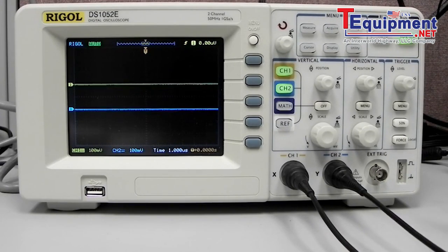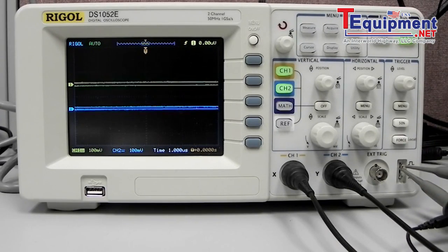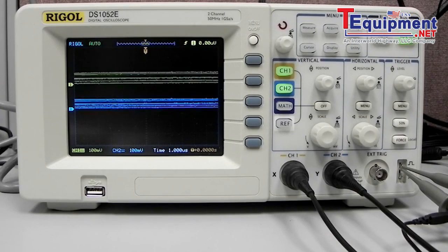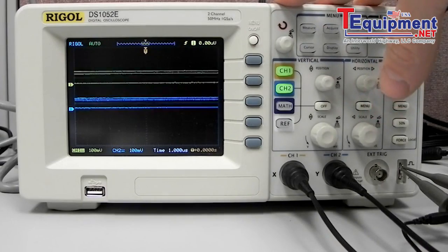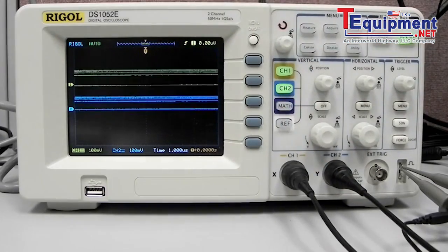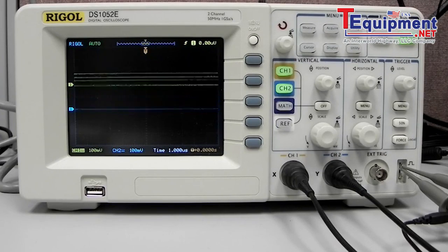First thing we're going to do is go to the probe compensation outputs here which is going to deliver a one kilohertz three volts approximately square wave. You can see that with the factory defaults we're not capturing the signal exactly like we would like.